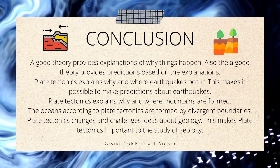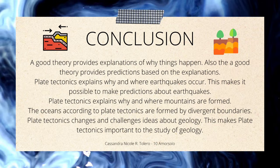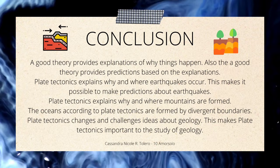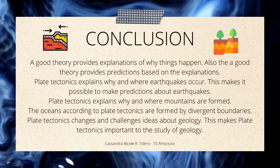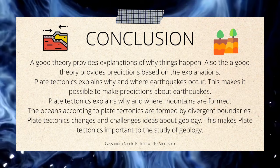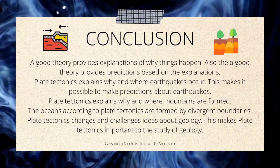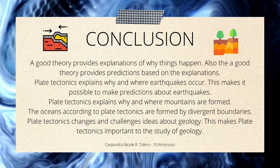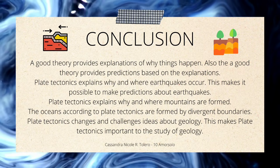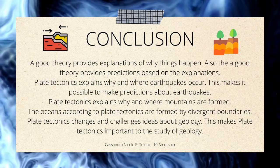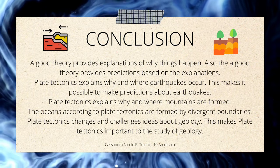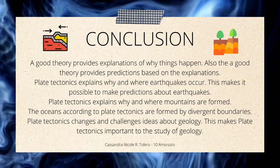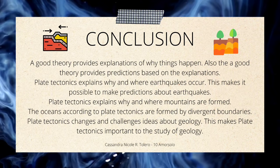In conclusion, a good theory provides explanations of why things happen and also provides predictions based on those explanations. Plate tectonics explains why and where earthquakes occur, making it possible to make predictions about earthquakes. Plate tectonics also explains why and where mountains are formed, and the oceans are formed by divergent boundaries according to plate tectonics.